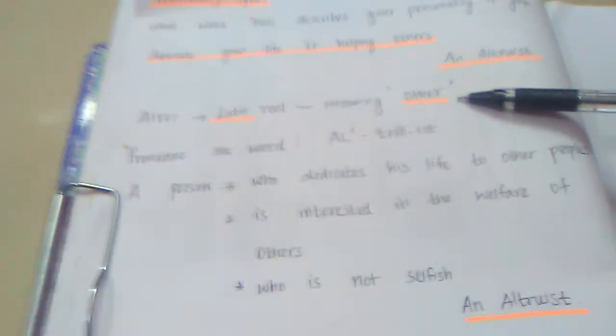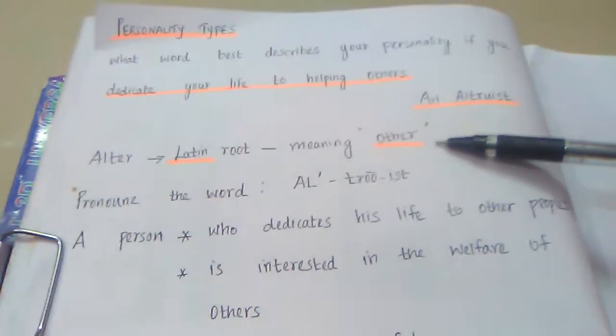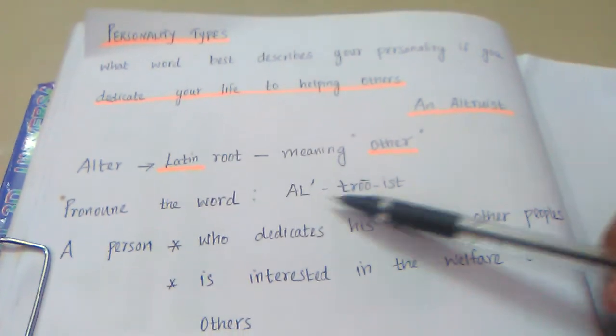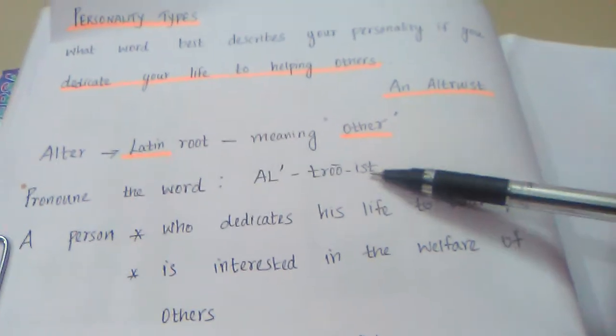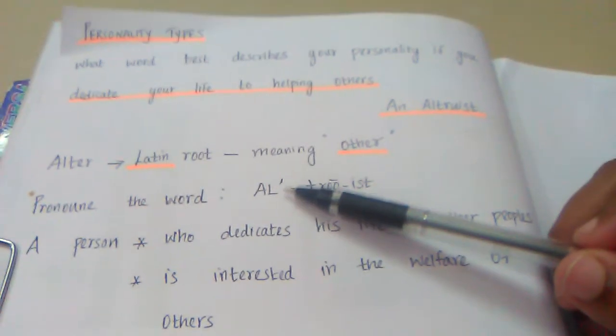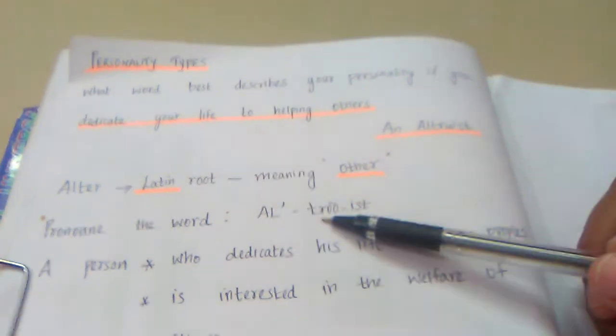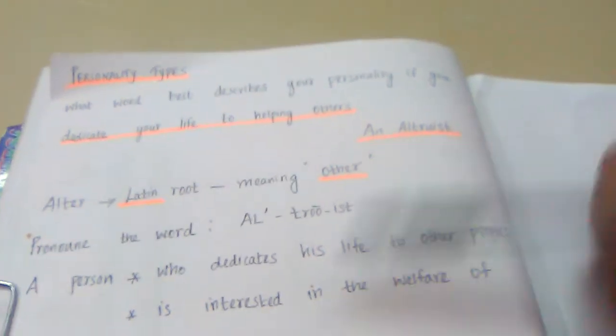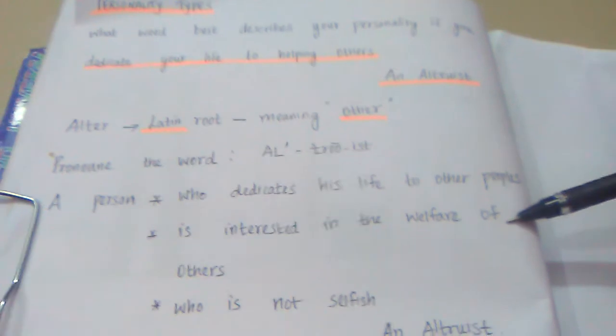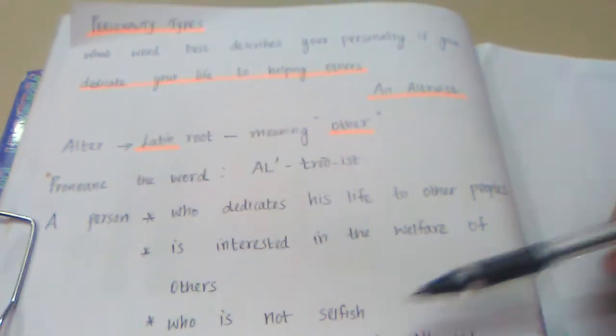Got it. So taking care of others is called an altruist. How to pronounce this word: A-L-T-R-U-I-S-T. Note the accent mark given on the first two letters: altruist. A person who dedicates their life to other people, is interested in the welfare of others, and who is not at all selfish is called an altruist.